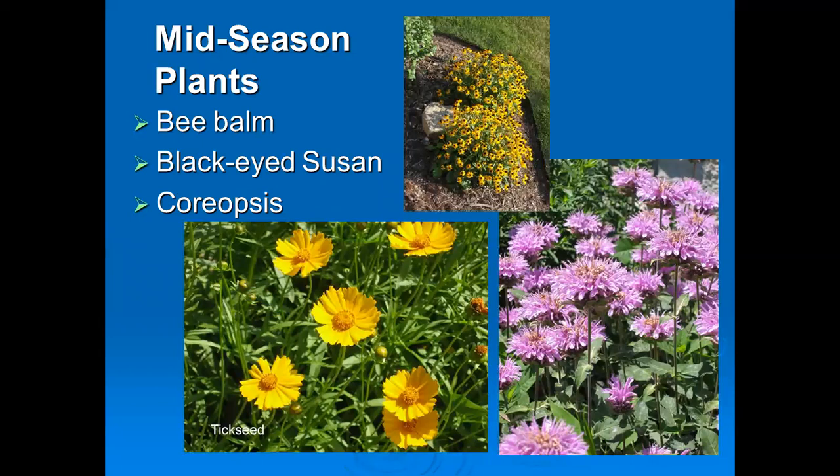Mid-season there are numerous plants to consider. Bee balm, agastache, black-eyed Susan, coreopsis — try to keep more of the native plants. Don't bring in a whole bunch of cultivars. All of these plants have been developed with cultivars — improved varieties — either for improved color or shorter habit than the natives. But try to keep more of the native varieties. They have better nectar and better flowers.